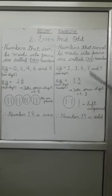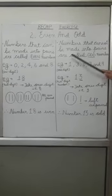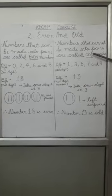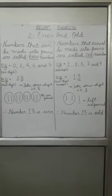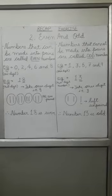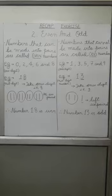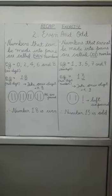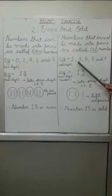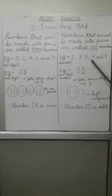Similarly, numbers that cannot be made into pairs are called odd numbers. Or we can say numbers that are not divisible by 2 are called odd numbers. Examples of one-digit odd numbers are 1, 3, 5, 7, and 9.